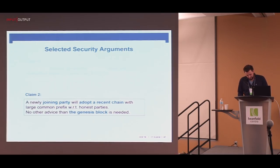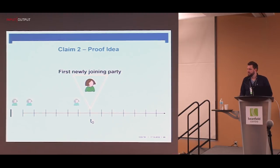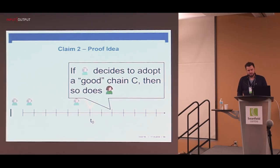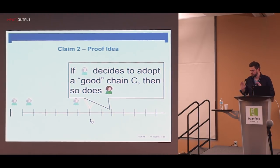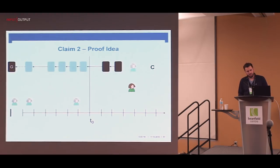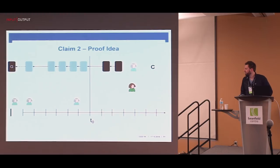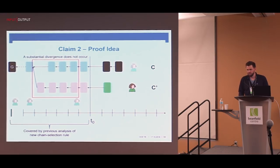For the second claim, consider Alice joining the execution for the first time. We conduct a fault experiment: we posit a spy — an angel Alice — observing the protocol from the beginning. We prove in the paper that if angel Alice decides to adopt a good chain, then so does the real Alice. If real Alice would prefer a chain that angel Alice rejects, this can only happen if she knows an entirely different history — which is not possible by the previous argument, since substantial divergences do not occur. So we're good.